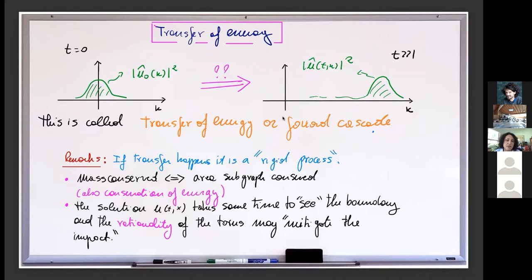The solution is going to take some time to see the effect of the boundaries; until then it spreads in a dispersive manner. So this phenomenon of growth is going to happen for T very large. Also the rationality or irrationality of the torus, in some sense, is going to mitigate the impact of the manifold. If the torus is rational, there is more chance the wave goes back on itself; if irrational, it has more room to spread. In particular, it matters what kind of irrationality you have — how far the irrational number is from a rational one — and we're going to see this in the analysis later.